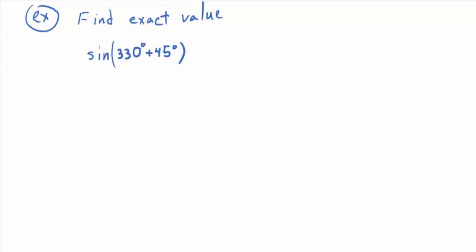Let's find the exact value of sine of 330 degrees plus 45 degrees. That's really the sine of 375 degrees, which equals the sine of 15 degrees since the period of sine is 360 degrees. 15 degrees is not a special angle, but if you split it up as the sum of two special angles and use the sum identity, you can get an exact value.